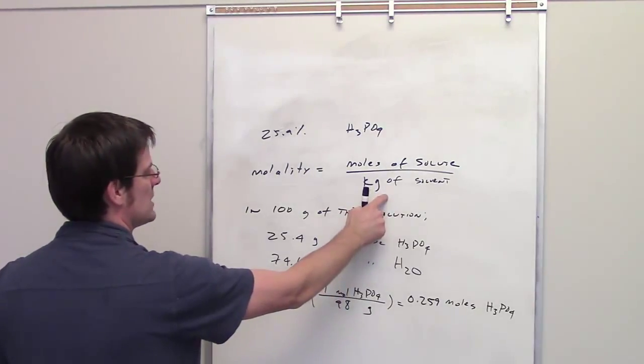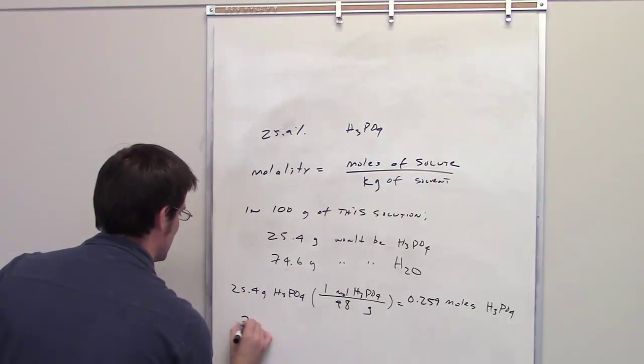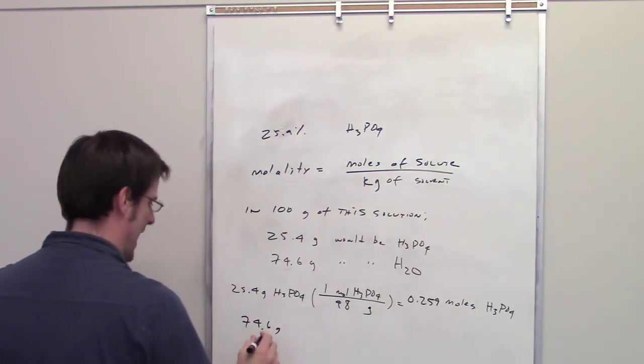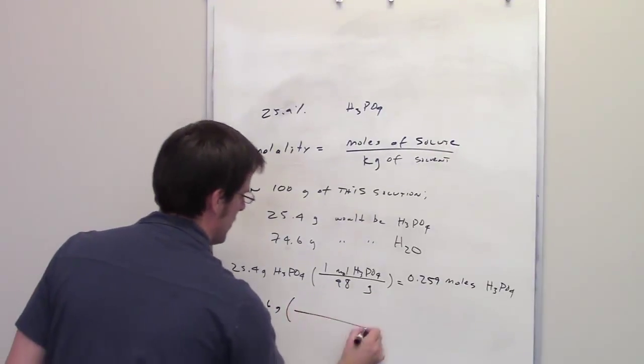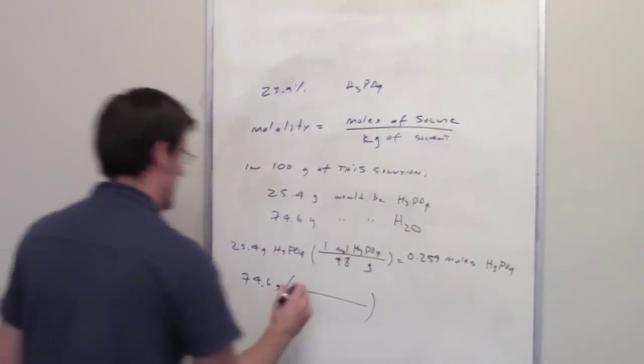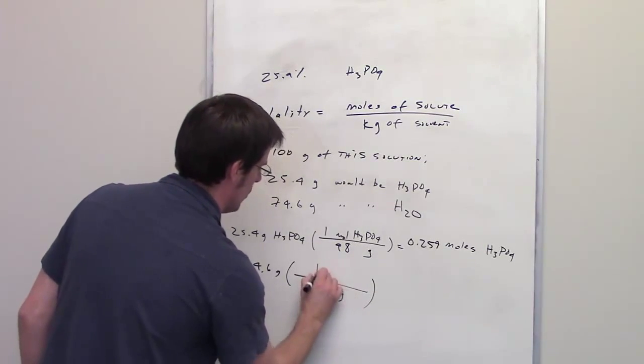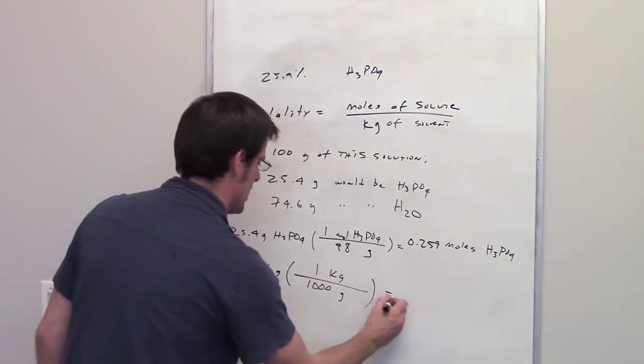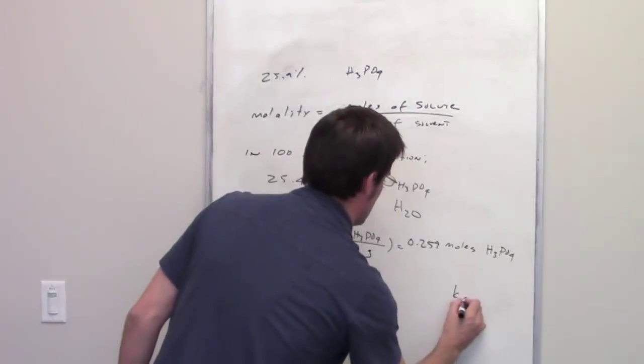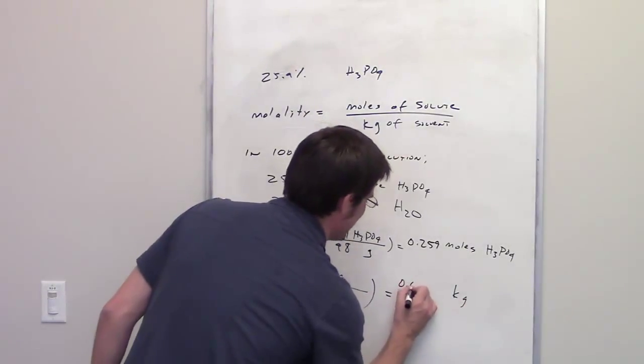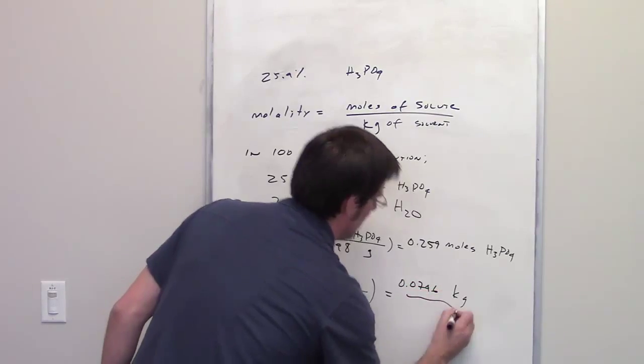Now, molality, I need to determine kilograms of solvent. I've got 74.6 grams of water. How many kilograms is that? Can you figure that out? I bet you can. We've got 1,000 grams in one kilogram. So I just plug and chug, and that tells me that this 74.6 grams is 0.0746 kilograms.